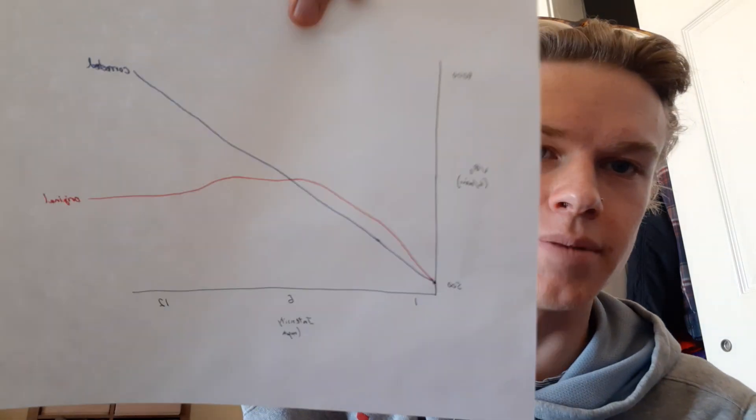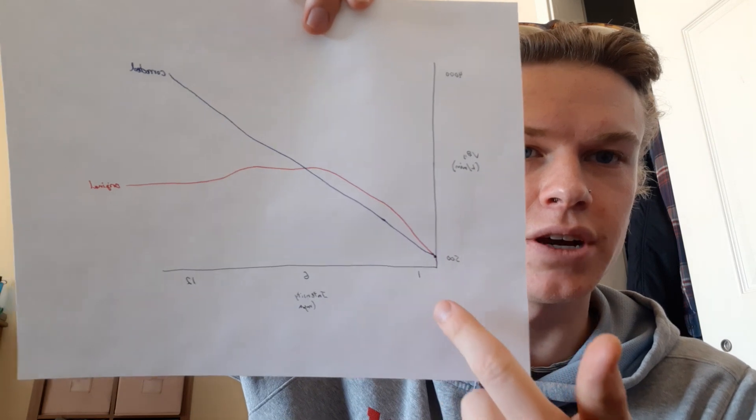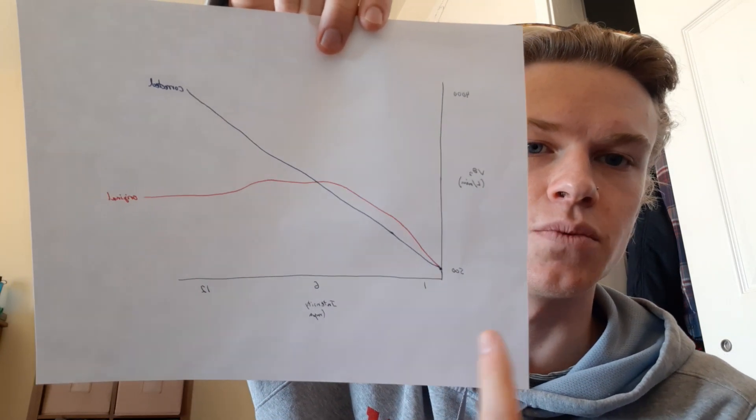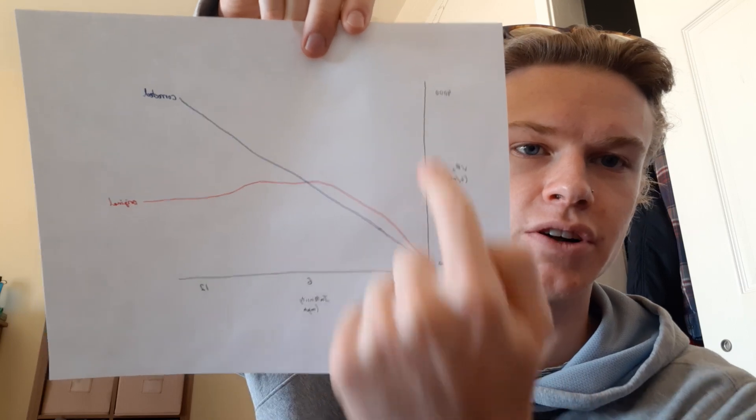So here we have our graph. We've got VO2 max over here, and then we have the miles per hour on the treadmill, so the intensity. It goes 1, 6, 12, and then it's 500, 4,000.